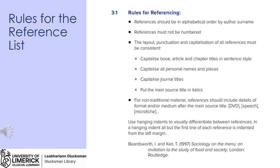Use hanging indents to visually differentiate between references. In a hanging indent, all but the first line of each reference is indented from the left margin — see the example below: Beardsworth and Kell. To include a hanging indentation in Microsoft Word, highlight the desired piece of text, right-click on it, and then select the paragraph options. Once you have opened this tab, you need to select 'hanging' under the special format.